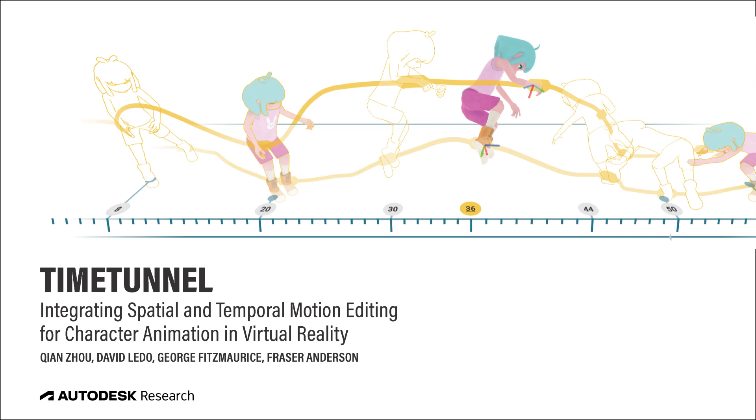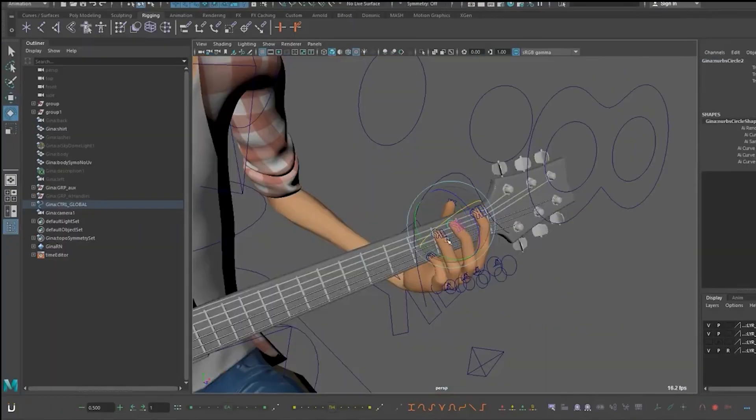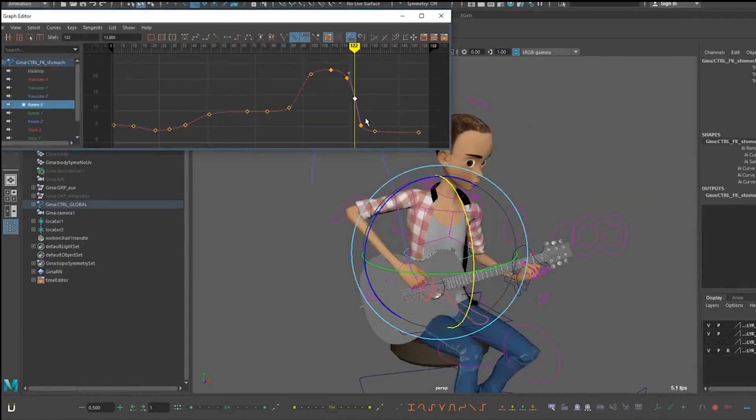Time Tunnel is a system that integrates spatial and temporal motion editing for character animation in virtual reality. Current desktop 3D animation approaches rely on separate views to manipulate the posing of a character or adjust the animations as a function of time.